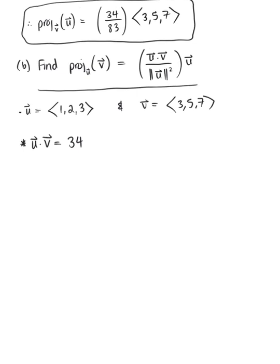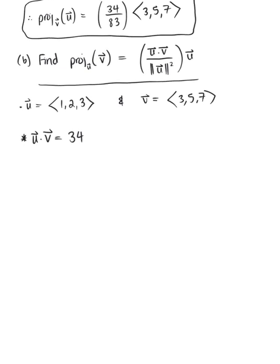Using the property that the magnitude of vector u squared equals vector u dotted with itself, we compute: 1² + 2² + 3² = 1 + 4 + 9 = 14.